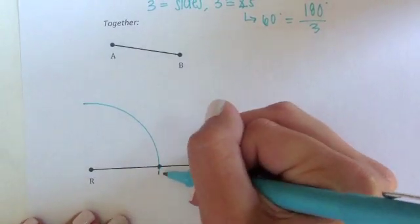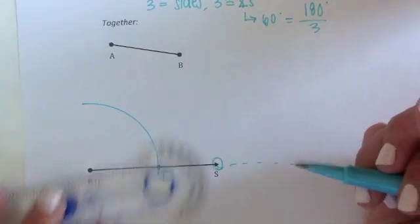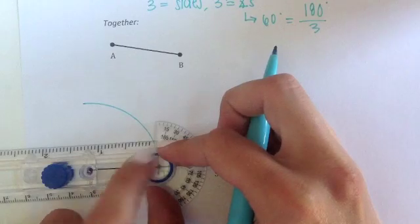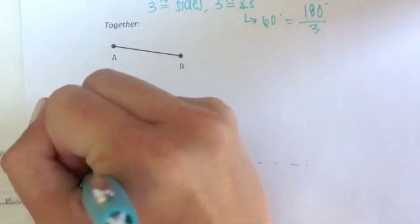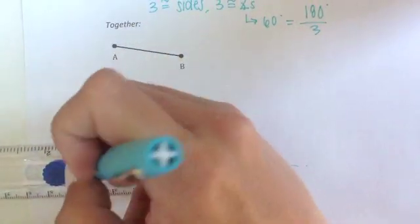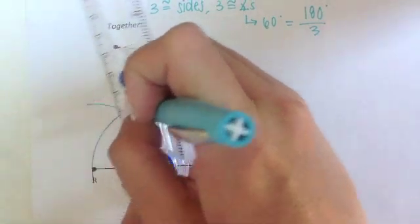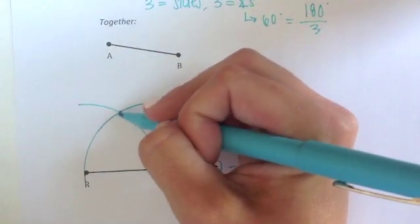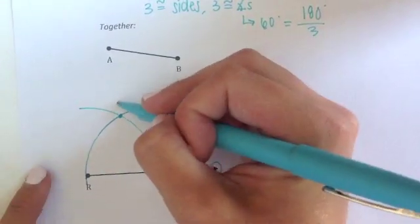Here I'm putting my center on T. Now I'm swinging down just a little bit and then way up high. Here I have this intersection point Q.